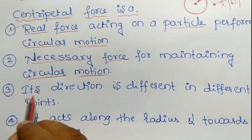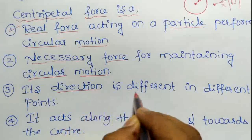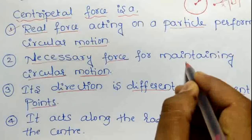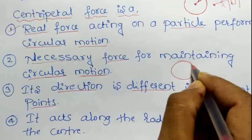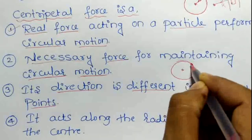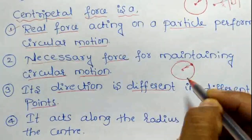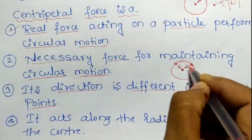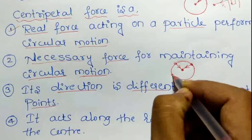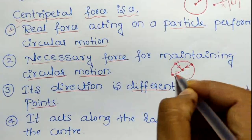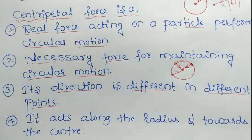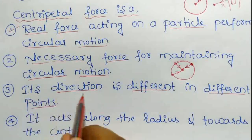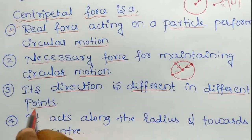Third characteristic: its direction is different at different points. For example, if the particle is at one point on the circular path, the centripetal force direction is towards the center from that point. If the particle is at a different point, the direction changes accordingly. So at every point, the direction of centripetal force continuously changes.